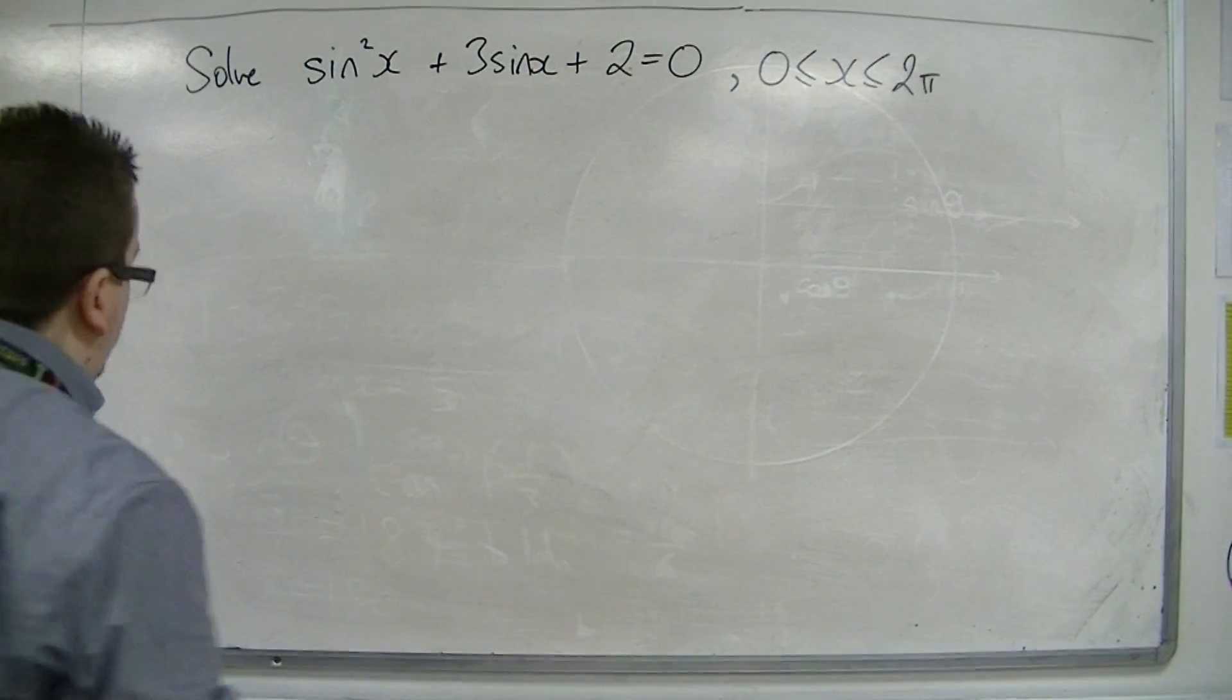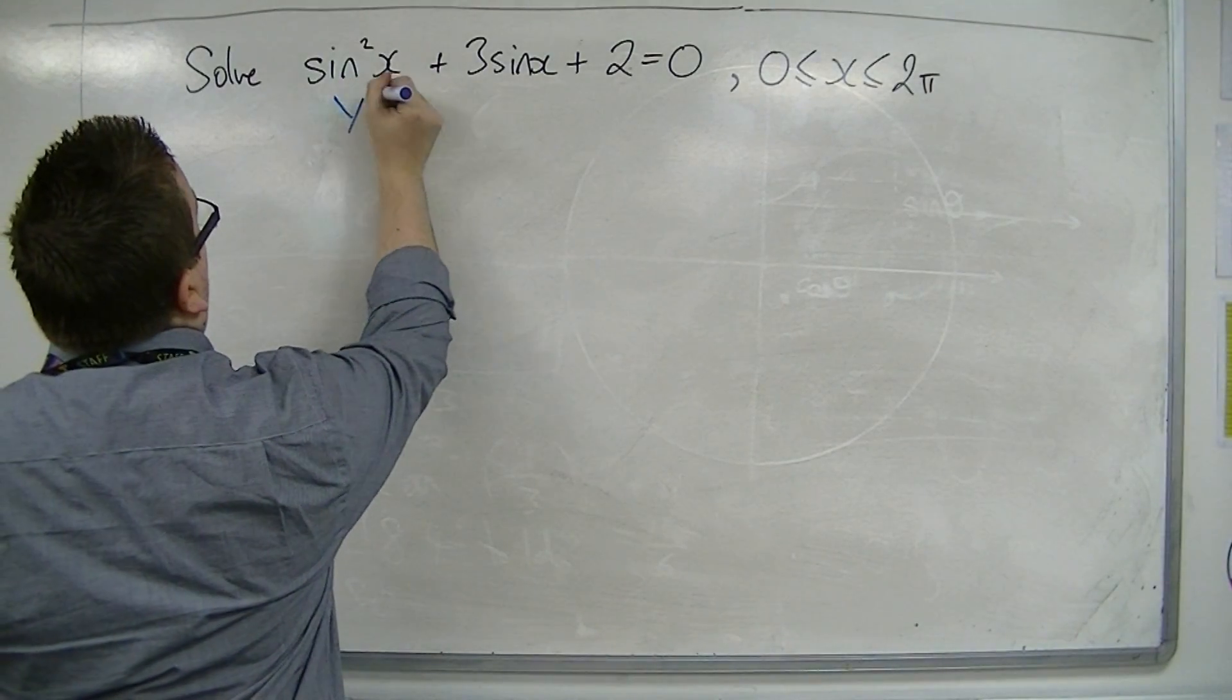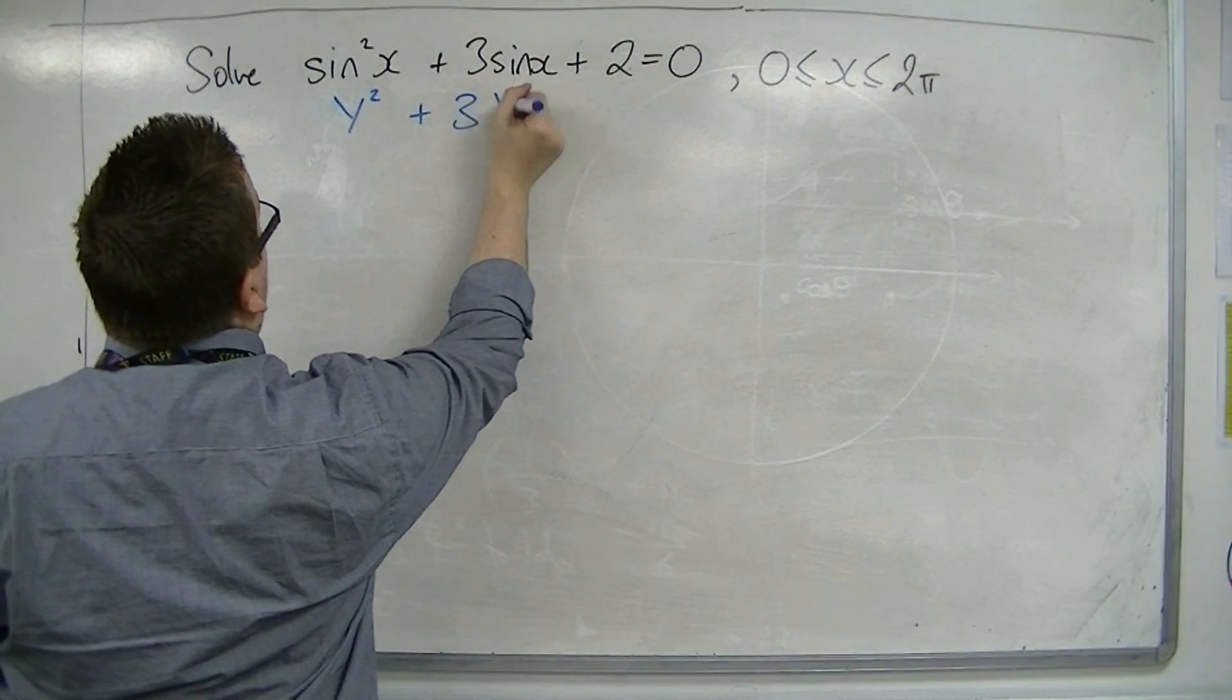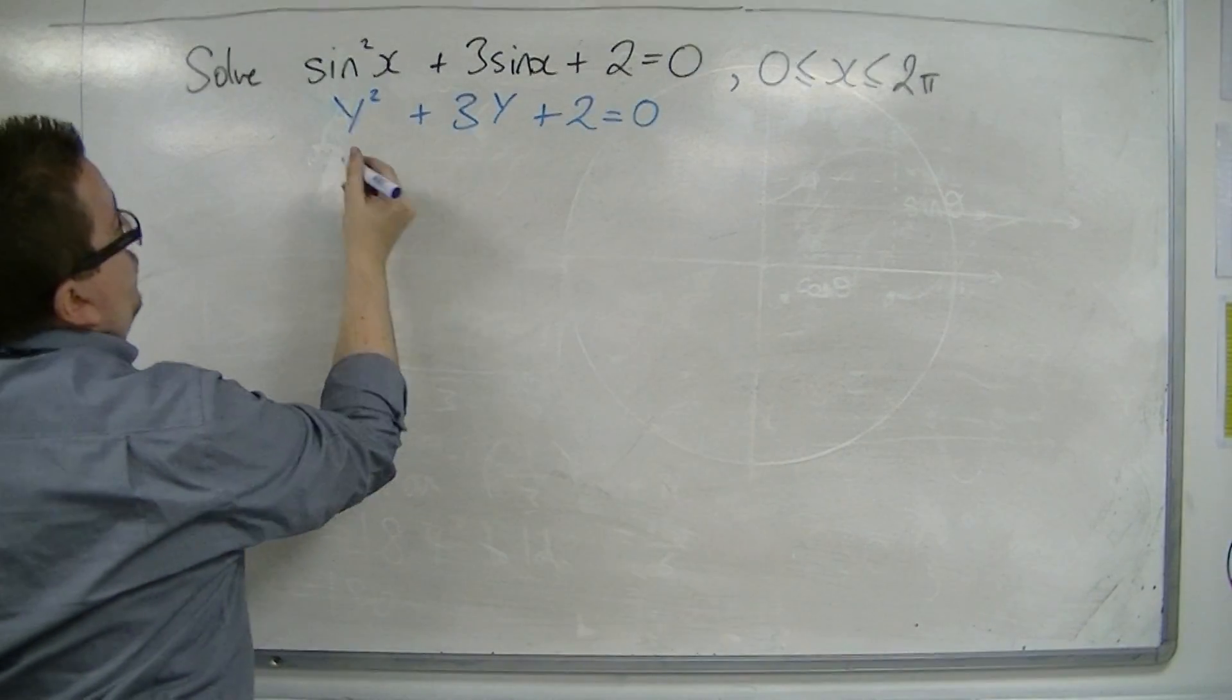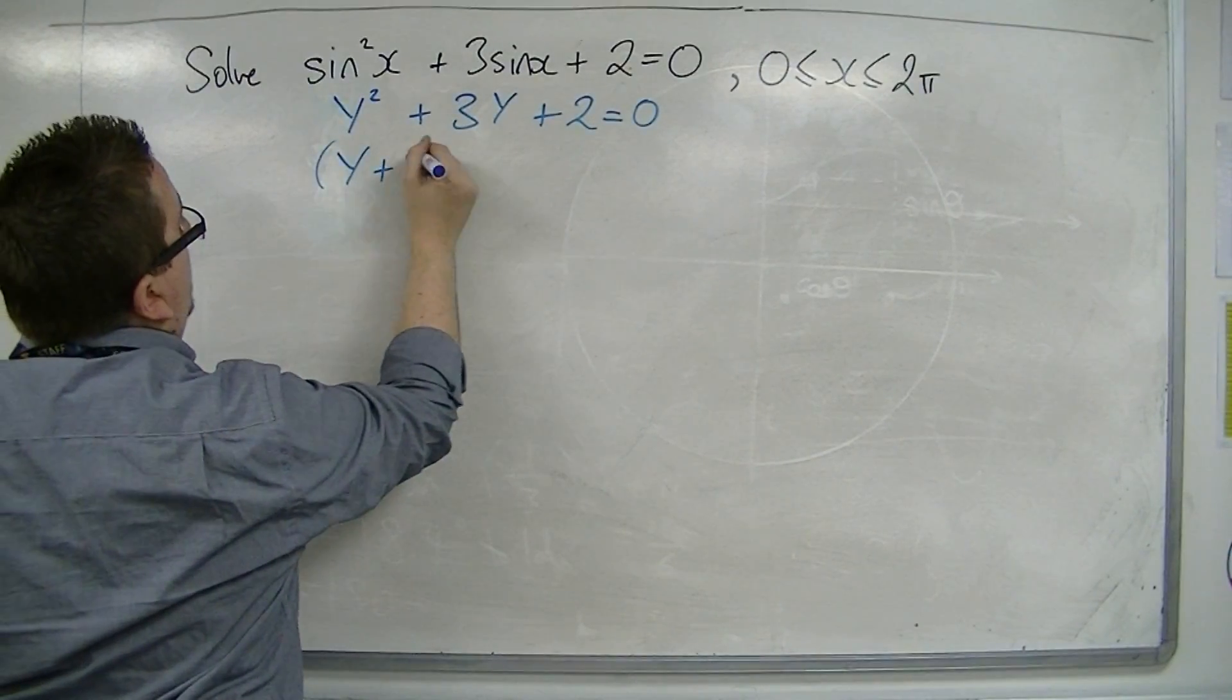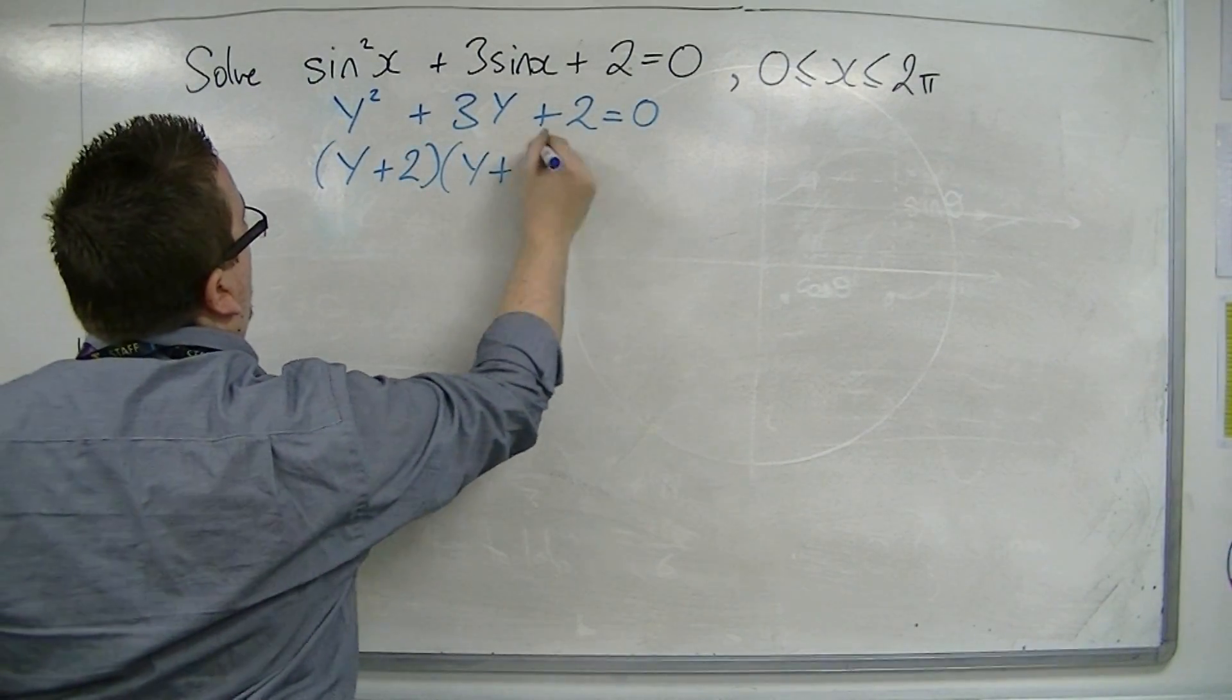Now, if you replaced sine x with y, then you would have y squared plus 3y plus 2 equals 0. Now, that can be factorised. That's y plus 2, y plus 1.